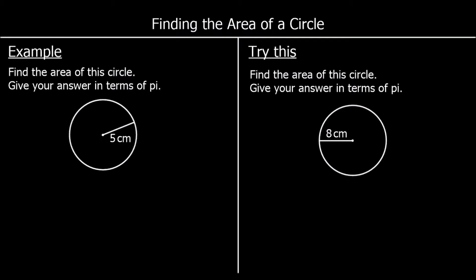To find the area of a circle, we use the formula pi times the radius squared — pi r squared.